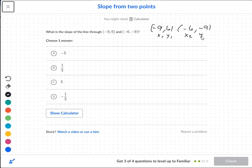Second y, subtract your first y, and this should be your second x, subtract your first x. My second y is negative 9, subtract 6. My second x is negative 6, subtract negative 9.